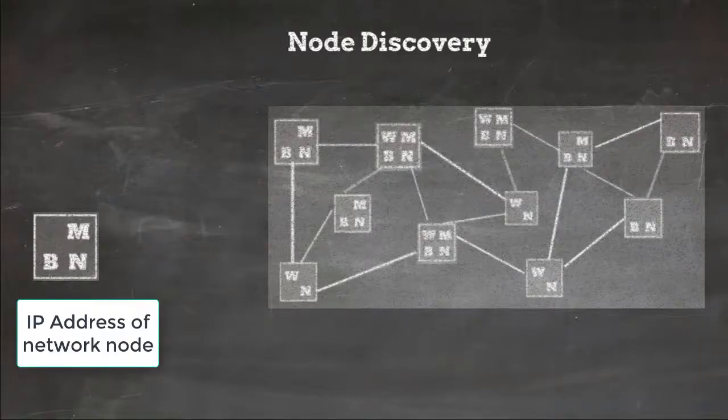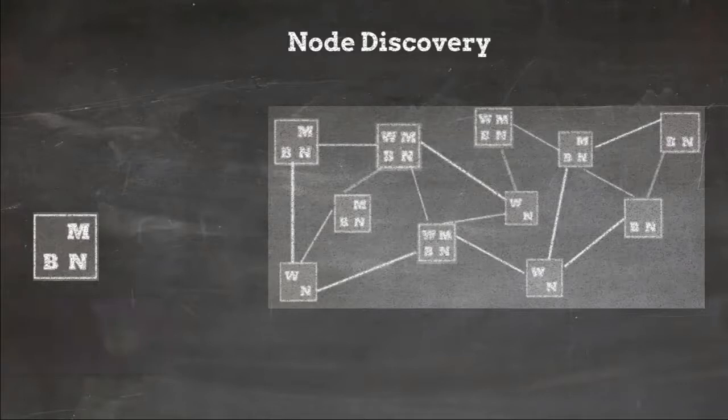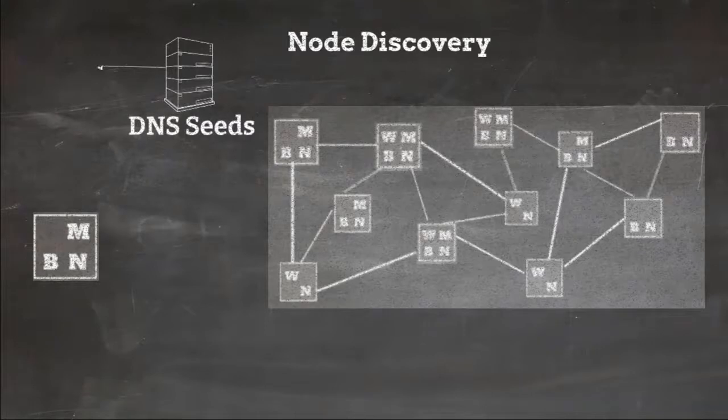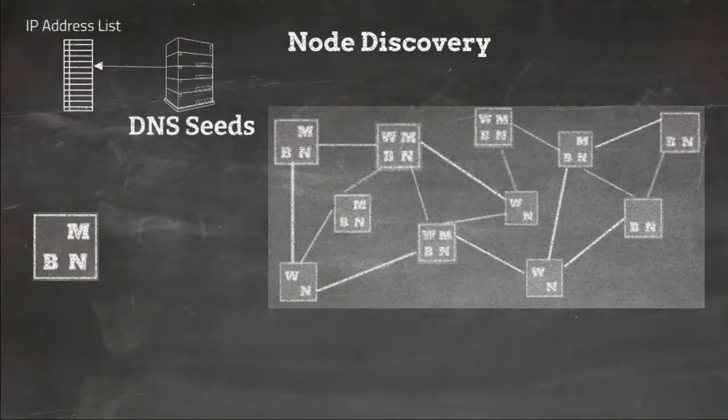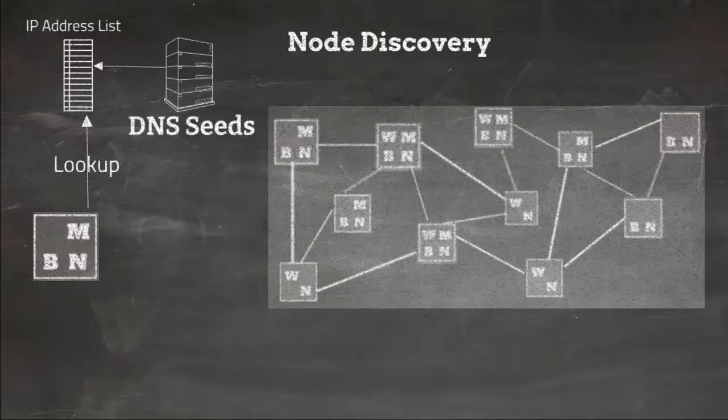There are several ways in which it can get IP address. Number one it can get IP address from servers called DNS seeds. DNS seeds are actually DNS servers which has the list of IP addresses of Bitcoin nodes. A lookup query will give IP address of full nodes that may accept new incoming connections. Bootstrap node can try to connect to any of these full nodes on port 8333.